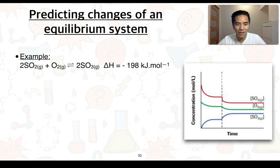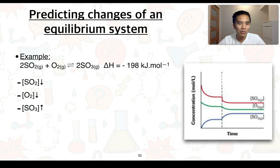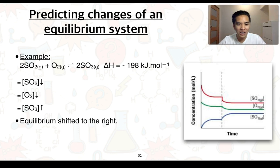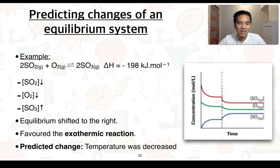For our final example, we look at the reaction producing sulfur trioxide, which has a negative delta H value — so it's an exothermic reaction. On the graph, the change at the dashed line resulted in a reduction in SO2 and O2 concentrations but an increase in SO3. This means equilibrium shifted in the forward direction, which is the exothermic reaction. Therefore, the initial stress must have been the opposite — a decrease in temperature — so equilibrium shifted to the right, favoring the exothermic reaction. That concludes the videos for subtopic 2.2.